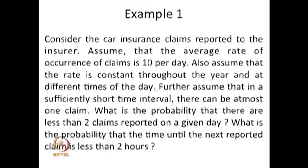Consider car insurance claims reported to an insurer — it need not be car insurance specifically; it can be any motor insurance or any type of vehicle. Assume that the average rate of occurrence of claims is 10 per day, and this rate is constant throughout the year and at different times of the day. Even though this is an average quantity, there is a possibility that on some day no claim is reported at all, or on some day 30 or 40 claims are reported.